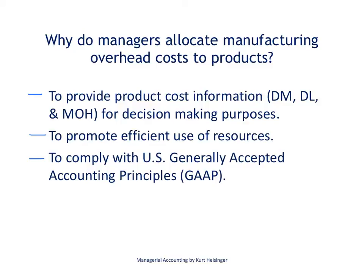So why do managers allocate manufacturing overhead costs to products? First of all, they want to have product cost information, which is comprised of three components: direct materials, direct labor, and manufacturing overhead. Direct materials and direct labor are easily traced to the product, but manufacturing overhead is not. So managers want to come up with effective ways to allocate these overhead costs to individual products to get a better sense of what it takes to produce them, and then use that information for decision-making purposes.